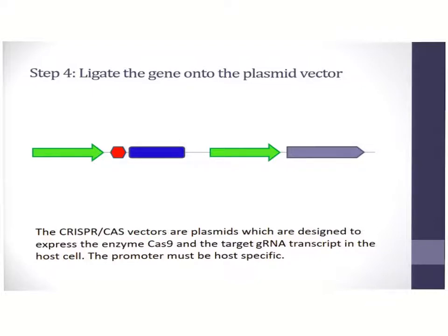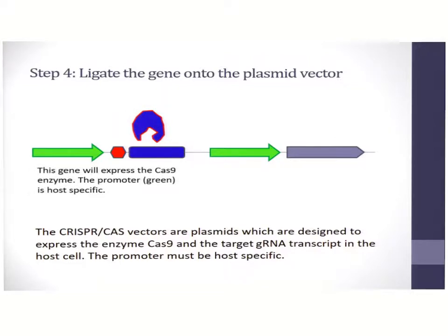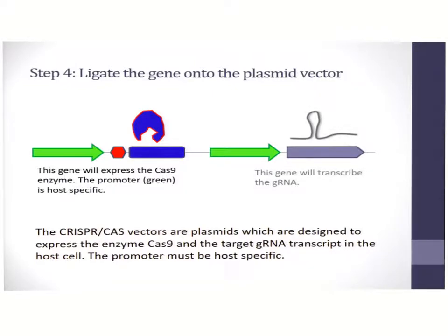The gene can be inserted into the plasmid vector. The green represents a promoter — this will be a cell-specific promoter. For instance, in a human cell line, the green can represent an SV40 promoter or a CMV (cytomegalovirus) promoter. The red hexagon indicates the ribosome binding site, and the blue indicates the Cas9 enzyme, which will be transcribed and translated by the host cellular machinery.